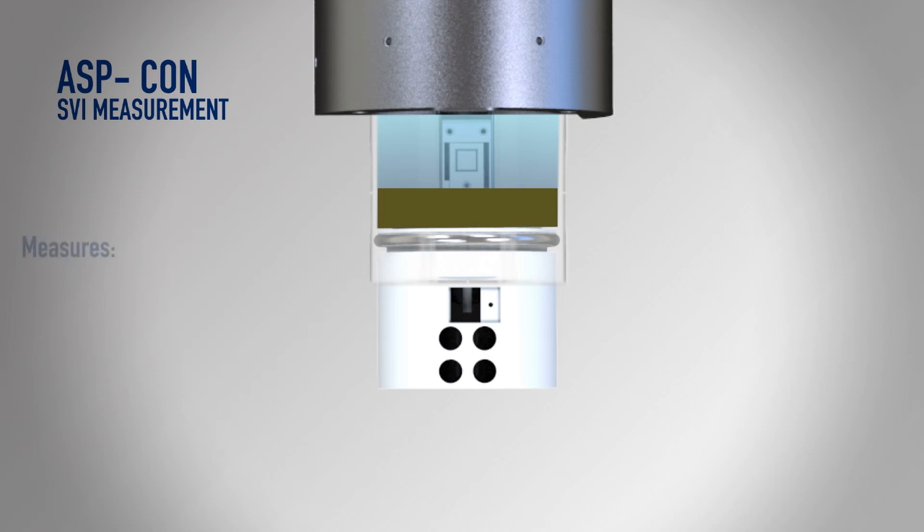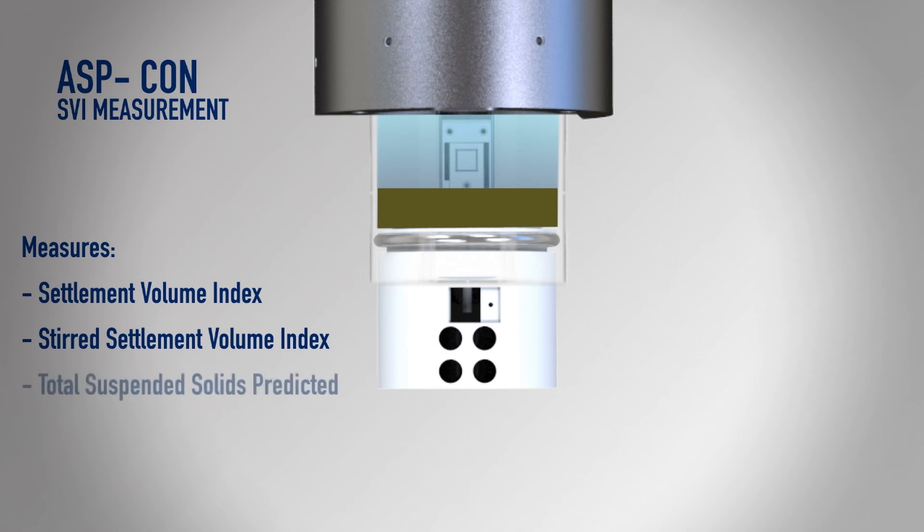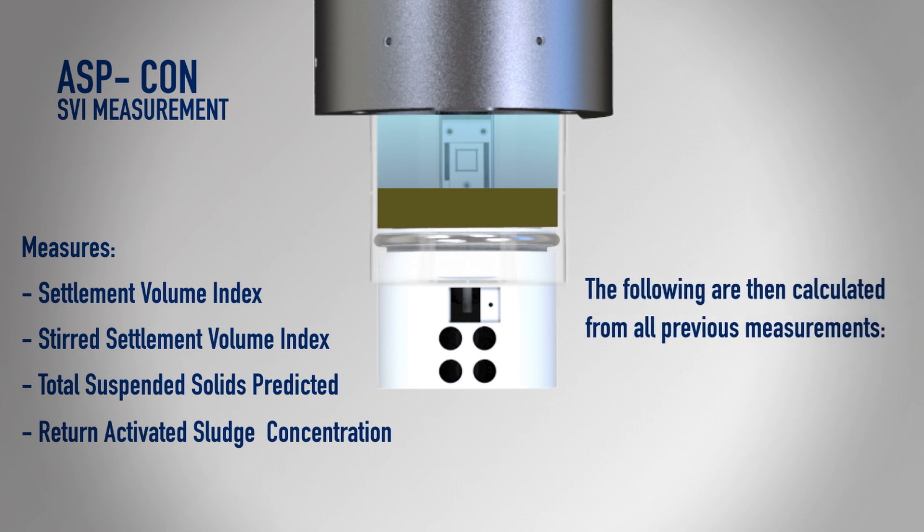The sensors measure the turbidity of each part of the sample and also the settlement volume index, stirred settlement volume index, total suspended solids predicted, return activated sludge concentration, and the following are then calculated from the previous measurements through to mass ratio and toxicity.